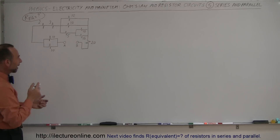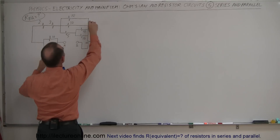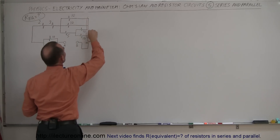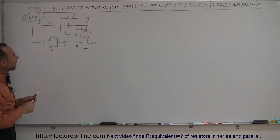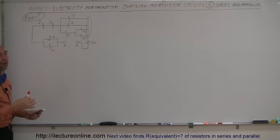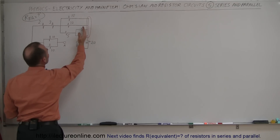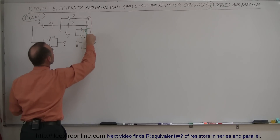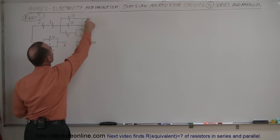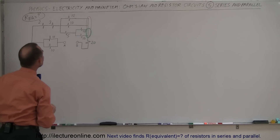But first, before we do that, we have to realize this looks kind of strange back here. Notice that we have all these pieces of the circuit come together in a single point, and it makes it a little bit complicated as to how we want to reduce that. So what I'm going to do is move this to the left and take this single portion and turn it into a single junction, then redo the circuit just a little bit to make it easier to deal with.